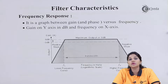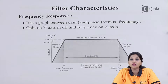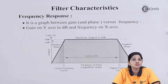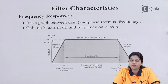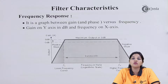Gain is the ratio of output to input. The output can be voltage or power. If gain is in terms of power, then in dB it is equal to 10 log base 10 of PO over PI, where PO is output power and PI is input power. In the case of voltage, the formula becomes 20 log base 10 of VO over Vin, where VO is output voltage and Vin is input voltage. Based on which factor is considered, the gain is calculated and plotted on the y-axis.